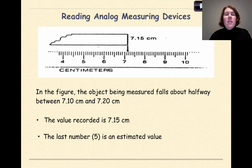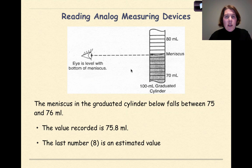Here's an example of a problem that involves reading an analog device. In the figure, the object being measured falls about halfway between 7.1 centimeters and 7.20 centimeters. So this spot that this arrow is pointing to right in the middle. The value is recorded as 7.15 centimeters. We don't know exactly if that's at the .05, but we can take an estimate that we're probably pretty close. So this last number, the 5, is an estimated value. So again, when you're measuring with analog devices, you want to measure as precisely as you can, and then one more estimated digit.